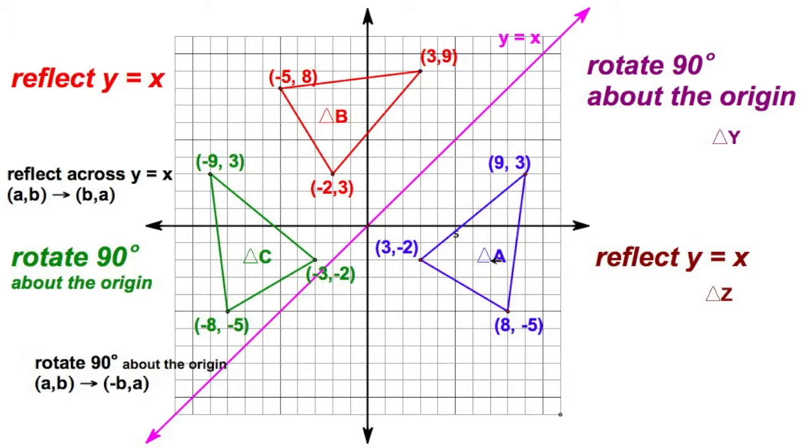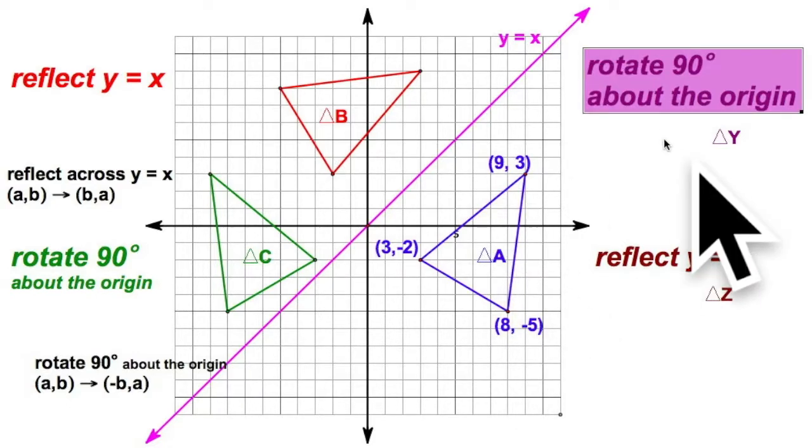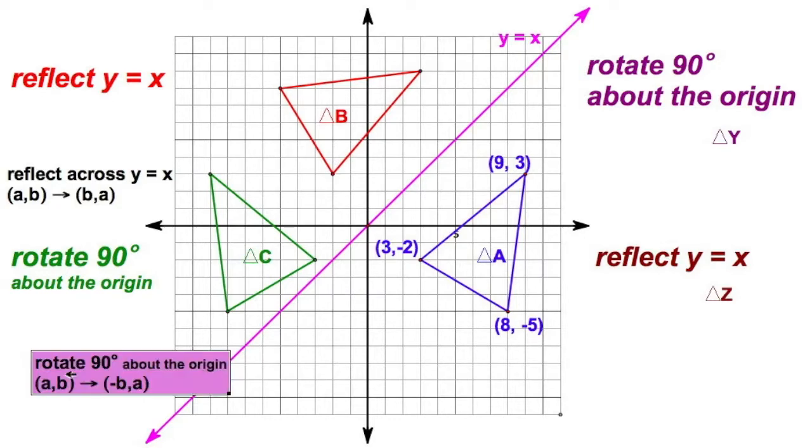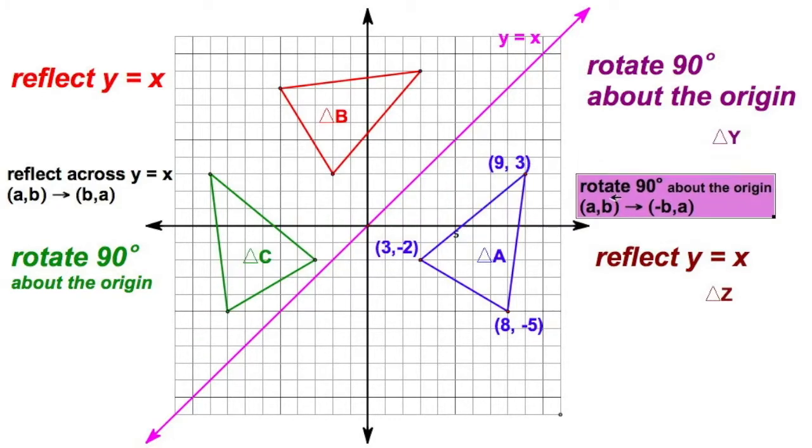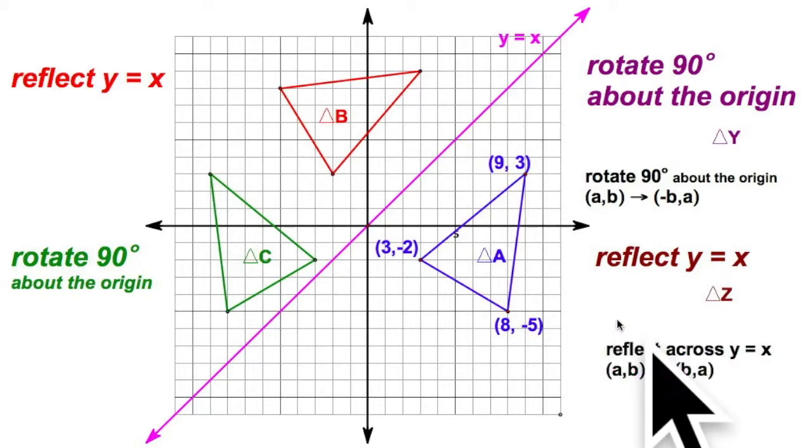Now, I mean, reverse the order of these transformations. I'm going back to this pre-image. Now, there's a lot of clutter here. So, I'm going to just hide those coordinate points. You don't need them anymore. You can see where they are. Now, let's just take this blue triangle and let's rotate this about the origin.